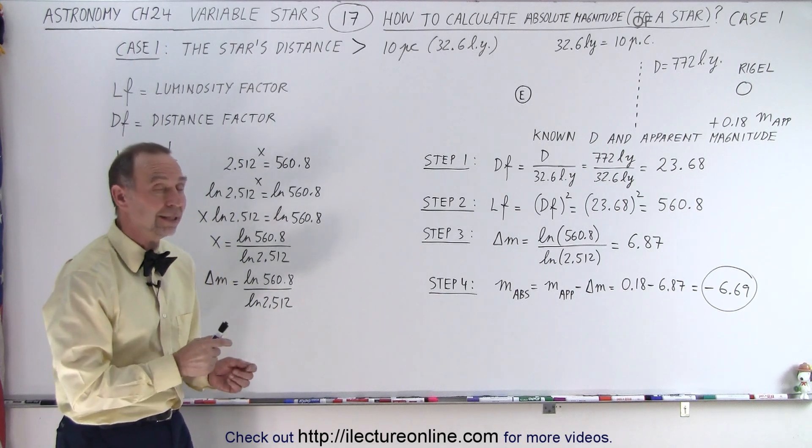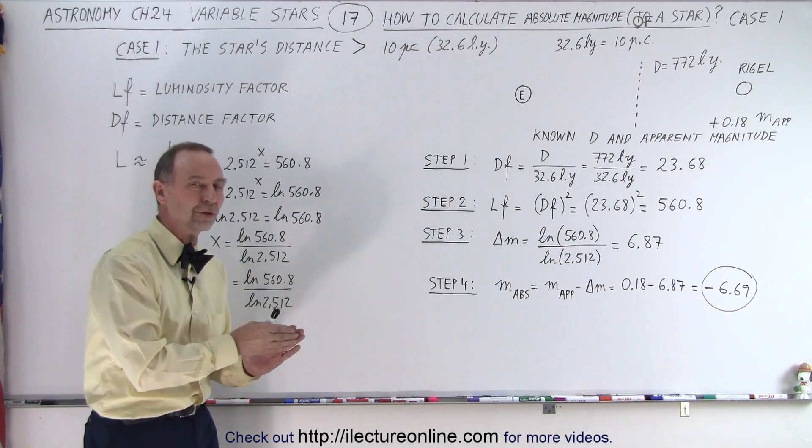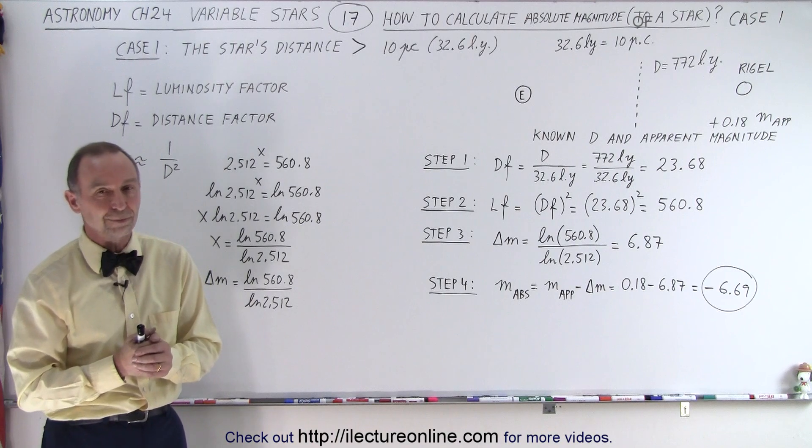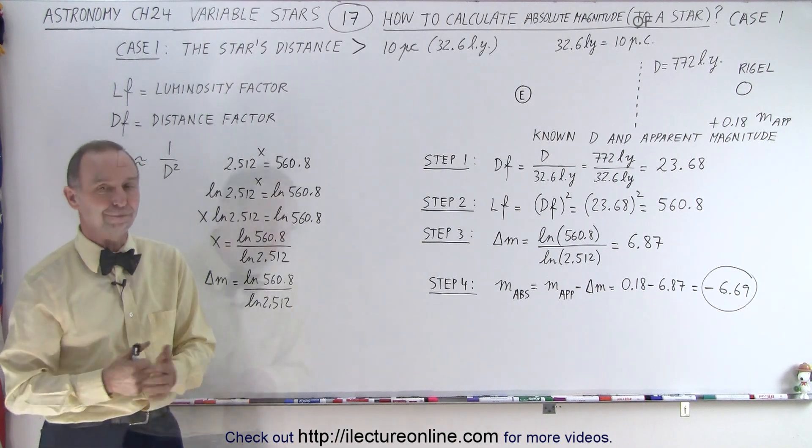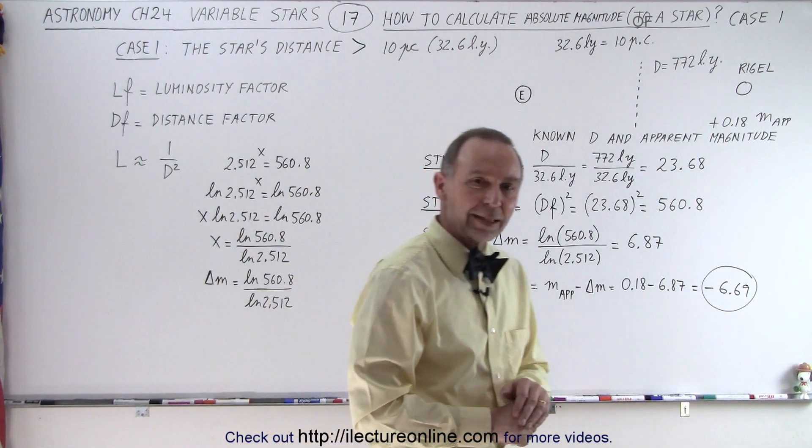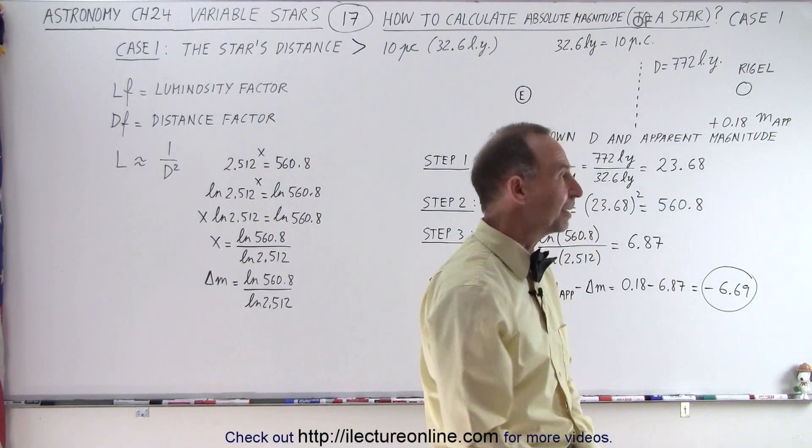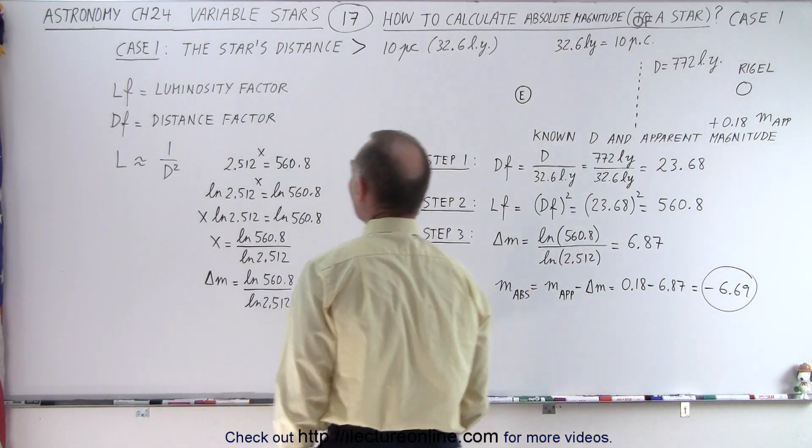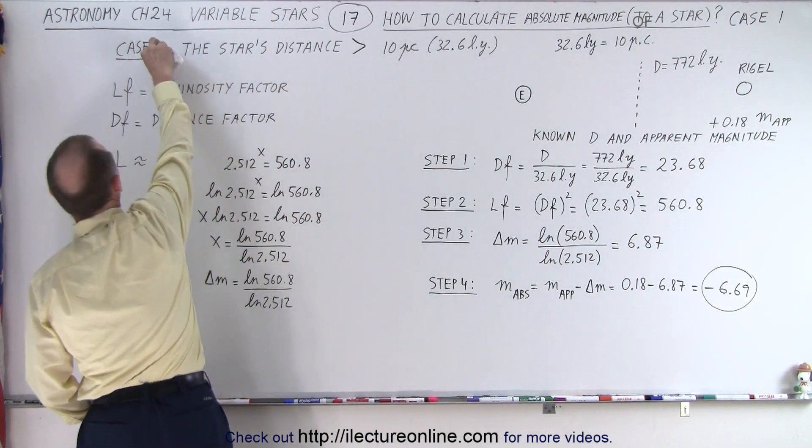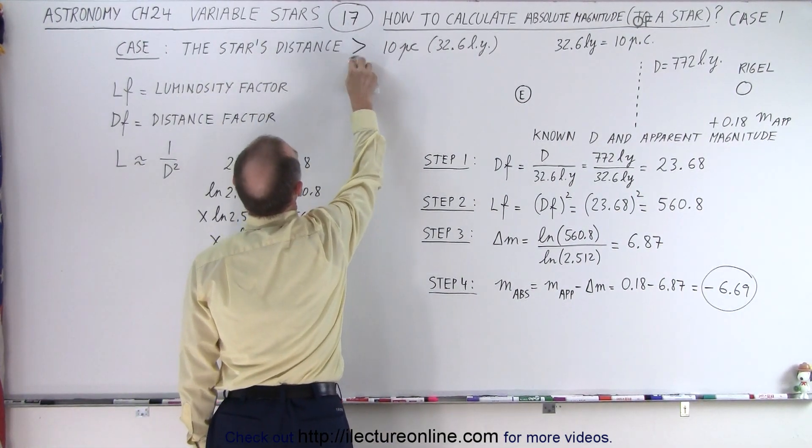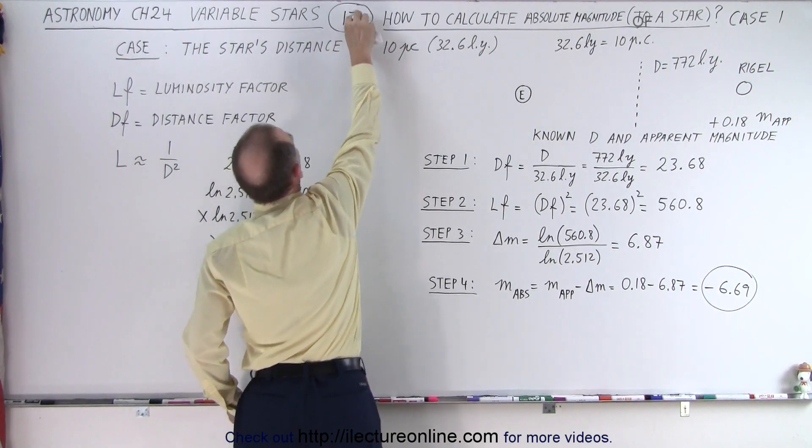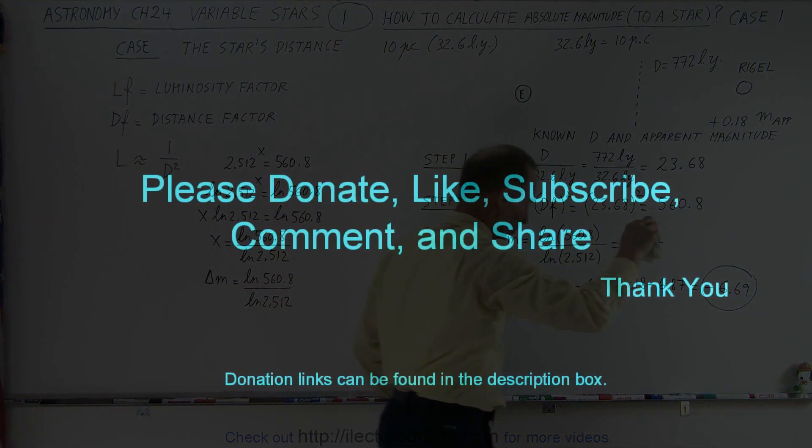In the next video, we'll do it again, but for a star that is closer than 10 parsecs away from us. That is how it's done. Okay, ready for step 2, or case 2? All right. This time, I won't forget to make this case 2. This is going to be less than 10 parsecs, case 2.